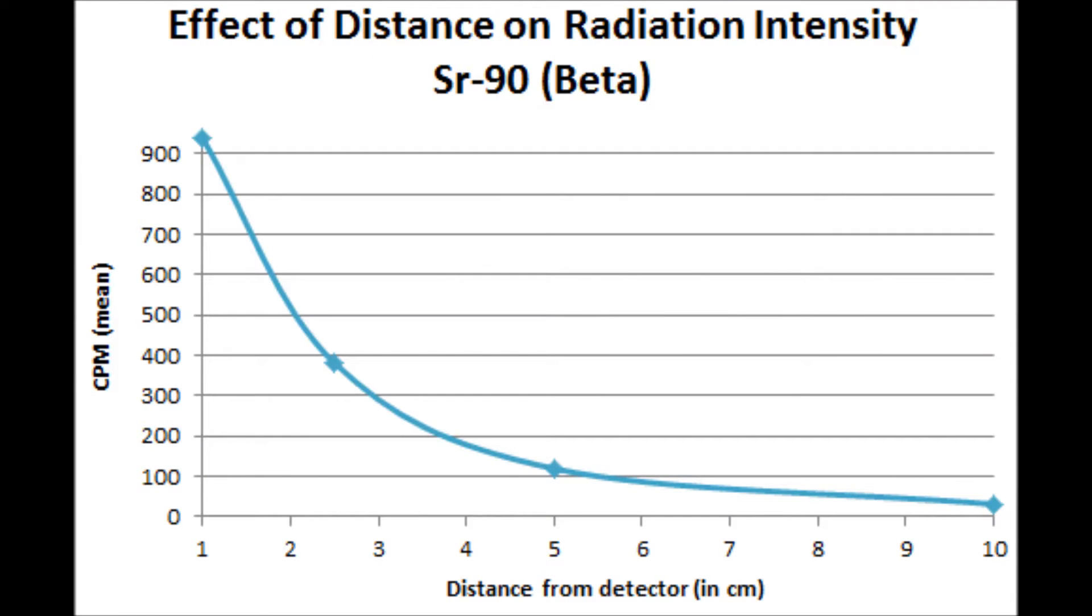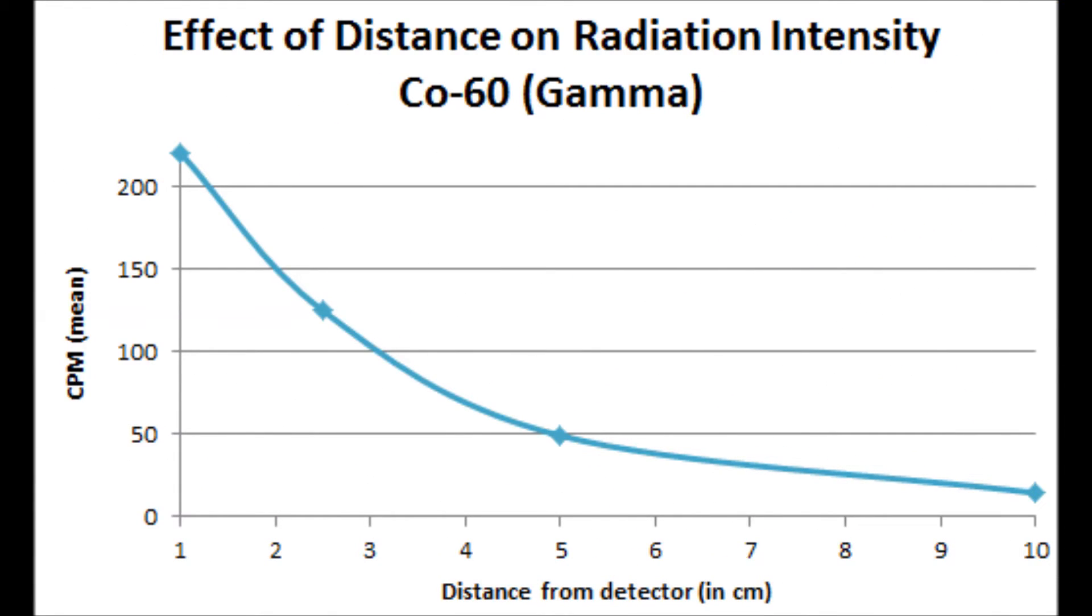Source PO210 alpha radiation had a high CPM, but when the shielding materials were added, the alpha radiation barely penetrated through the thinnest shielding material, paper.